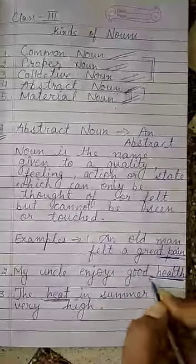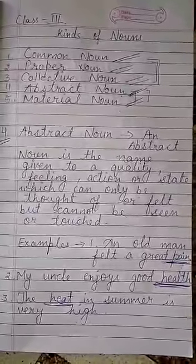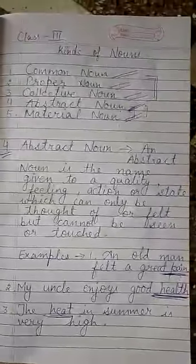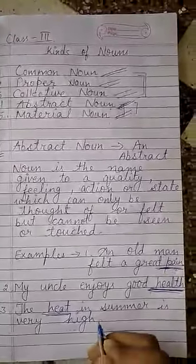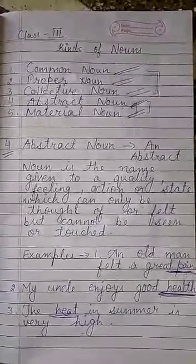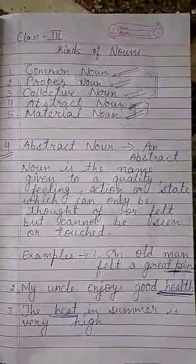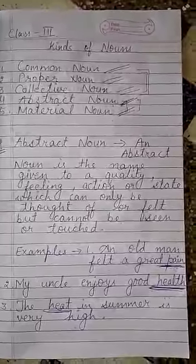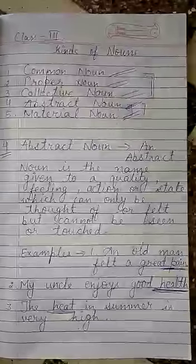'My uncle enjoys good health.' Uncle ki health kaisi hai — good health hai. Unki jo health hai woh unki ek state hai, ek condition hai. Another example: 'The heat in summer is very high.' Garmiyon ke mausam ki jo heat hoti hai woh bahut zyada high hoti hai — compared to winter. Jo heat hai woh bahut tez hoti hai, aur usko hum garmiyon mein sirf feel kar sakti hain.